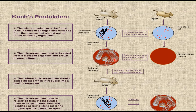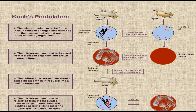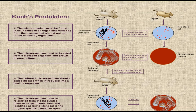The third postulate states that the cultured organism should cause the disease when introduced into a healthy organism. The fourth postulate states that the microorganism must be re-isolated from the inoculated experimental host and identified as being identical to the original specific causative agent. These are the four main Koch postulates explained under the germ theory of disease by Robert Koch.